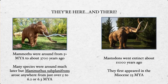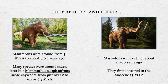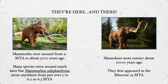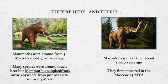Mammoths were around from about 5 million years ago to 3,700 years ago, though many species were not around at that 5-million-year mark — some arose from about 6.2 to 6.3 million years ago, but many were more recent. You didn't have as many species of mastodons as you did mammoths, though even that is up for debate. Mastodons went extinct about 11,000 years ago, and an established mastodon species first appeared in the Miocene about 23 million years ago. Evolution moves very, very slowly.